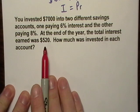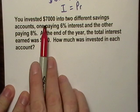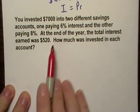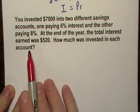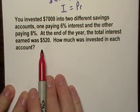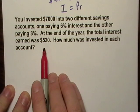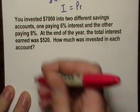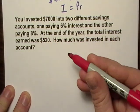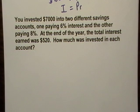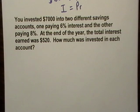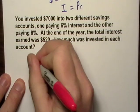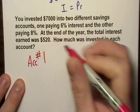So basically I took $7,000, I put a little bit of it in one account, I put a little bit of it into another account, and at the end of the year I made $520. Let's write down what we know and call one of these account one and account number two. We'll have bank account number one and bank account number two.